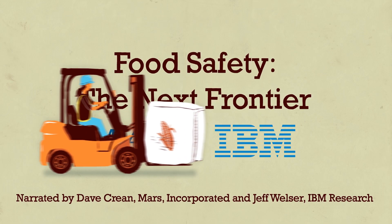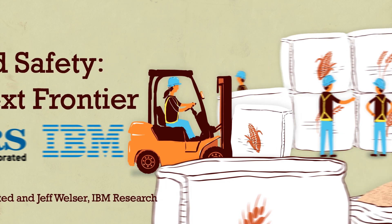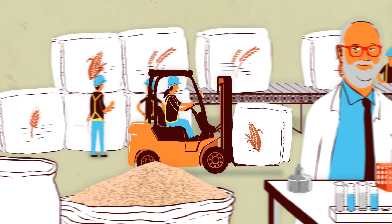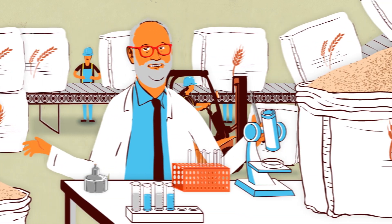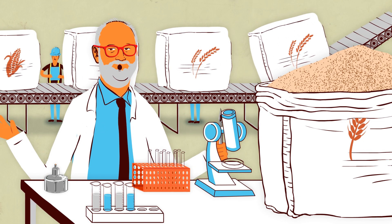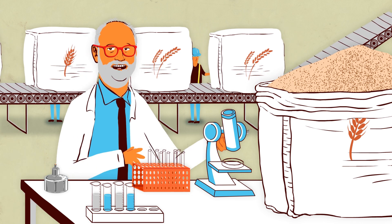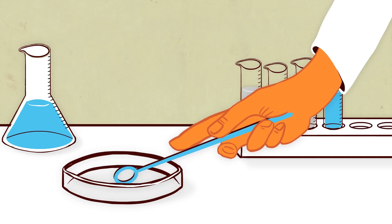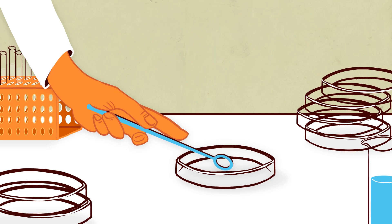We all want to make sure that our food is safe, but doing that can be really hard. Looking for contaminants in raw materials is tough. The statistics are stacked against us. Today, we can only test for pathogens individually, one sample at a time.